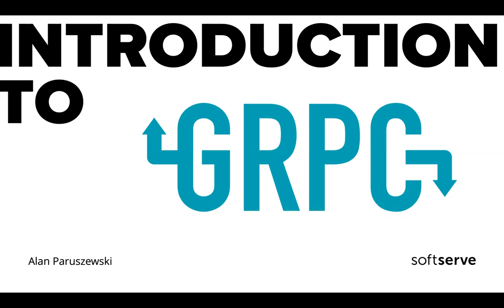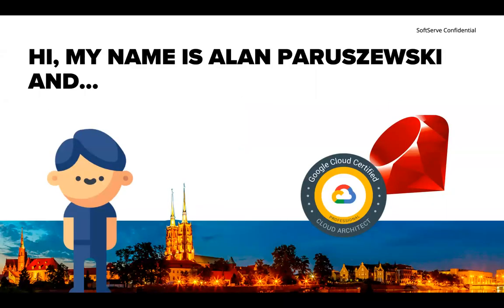Shortly about myself: I'm Alan Parshevsky. I'm related to Ruby. I'm related to Google. I'm an application architect based in the Wroclaw office in Poland, and interested mainly in all technologies related to the web or to Google Cloud.